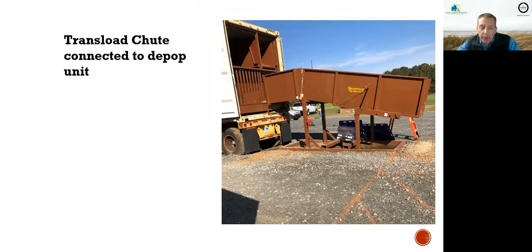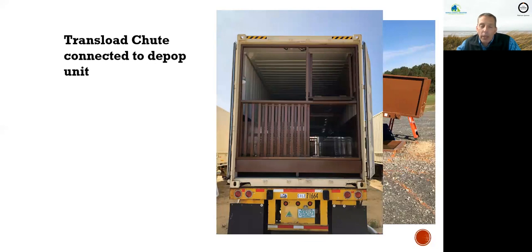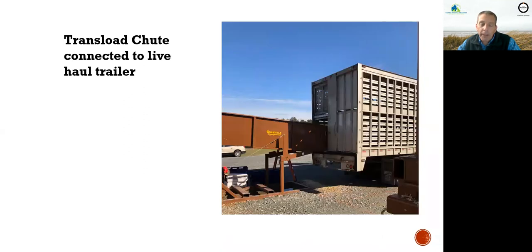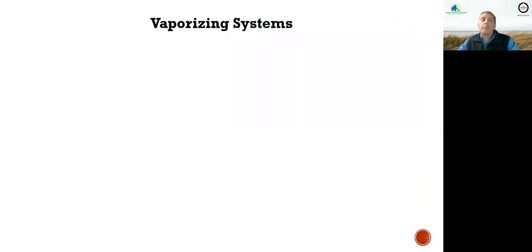Here is a transload chute connected directly to the depop unit. The live haul truck connects to this end. The problem is the live haul trailer height — we built these to height, so the trailer height comes to a specific line. With the conveyor floor there's about a 14-inch height difference, which is the reason we need the transload chute. Alternatively, if we set up six containers on one side, we could grade the area lower so the live haul trailer can back directly up to the depop units. Here you can see the live haul trailer connected directly to the transloading chute.